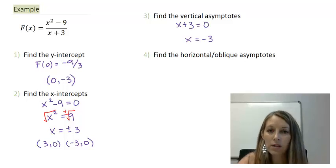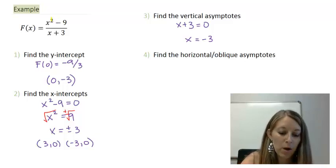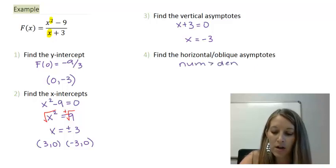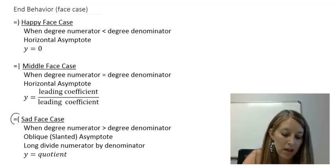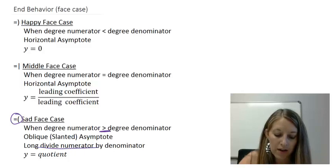Finding the horizontal or oblique asymptotes, I look at the degrees. The degree of my numerator is 2, and the degree of my denominator is 1, so the numerator's degree is greater than the denominator's. Reviewing our cases, that puts us in the sad face case, because the numerator degree is greater than the denominator. So we have to do long division here.